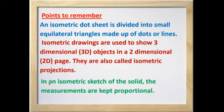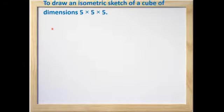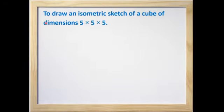In an isometric sketch of the solid, the measurements are kept proportional. Children, we all know that any solid shape is a three-dimensional object. It means that it has three dimensions. They are length, breadth and height.